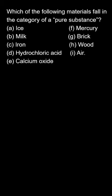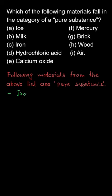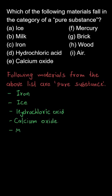As we know, air is also a mixture of certain gases like nitrogen, oxygen, carbon dioxide, and water vapor which have different chemical properties. So from the list that is provided to us, the particles that are listed under the pure substances are the following: iron, ice, hydrochloric acid, calcium oxide, and mercury.